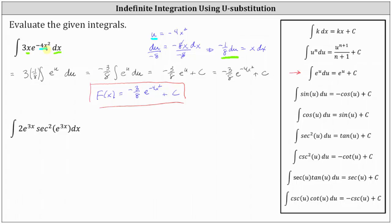Looking at our second example, notice how the integrand function involves secant squared. Therefore, we will be applying the integration formula for the integral of secant squared u du, which means u equals e to the power of 3x. So we let u equal e to the power of 3x and find du, which equals the derivative of e to the power of 3x times dx. To differentiate e to the power of 3x, we apply the chain rule: the derivative is e to the power of 3x times 3, or 3e to the power of 3x, times dx.